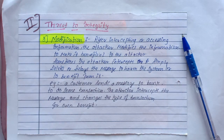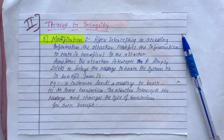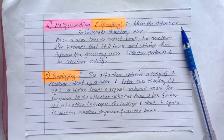Next is threat to integrity. The first attack is modification. After intercepting or accessing information, the attacker modifies the information to make it beneficial to themselves. Sometimes the attacker intercepts and simply deletes or delays the message to harm the system or benefit from it. For example, a customer sends a message to a bank to do some transaction, and the attacker intercepts and changes the type of transaction for their own benefit.